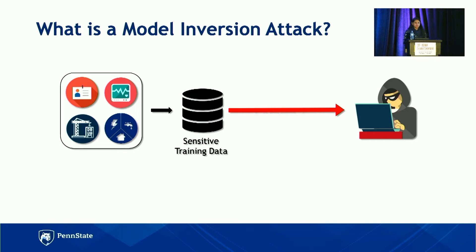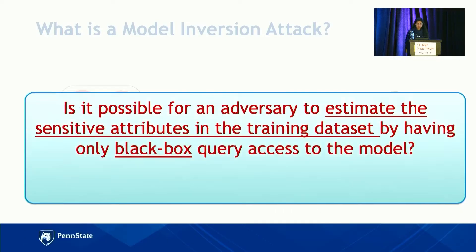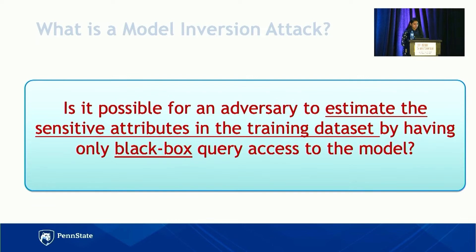The access of the adversary could be of different types — for example, white box access or black box access — but we focus in this work on only the black box access, which is a more practical assumption for the threat model. The main research question we address is: is it possible for an adversary to estimate the sensitive attributes in the training dataset by having only black box query access to the model?